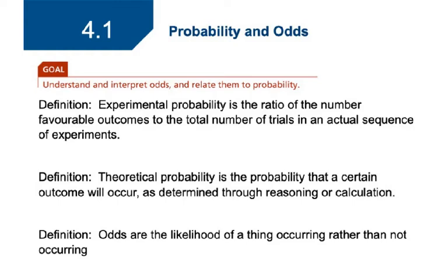We have two types of probability we can deal with. We have experimental probability, which is the ratio of the number of favorable outcomes to the total in an actual sequence of experiments. This would be something like flipping a coin 100 times and getting heads 52 of them. The probability of getting heads in that case would be 52 out of 100.